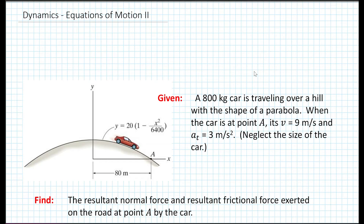Our first example: an 800 kilogram car is traveling over a hill with the shape of a parabola. When the car is at point A, its velocity is 9 meters per second and a_t is 3 meters per second squared. Neglecting the size of the car, we're asked to find the resultant normal force and resultant frictional force exerted on the road at point A by the car.